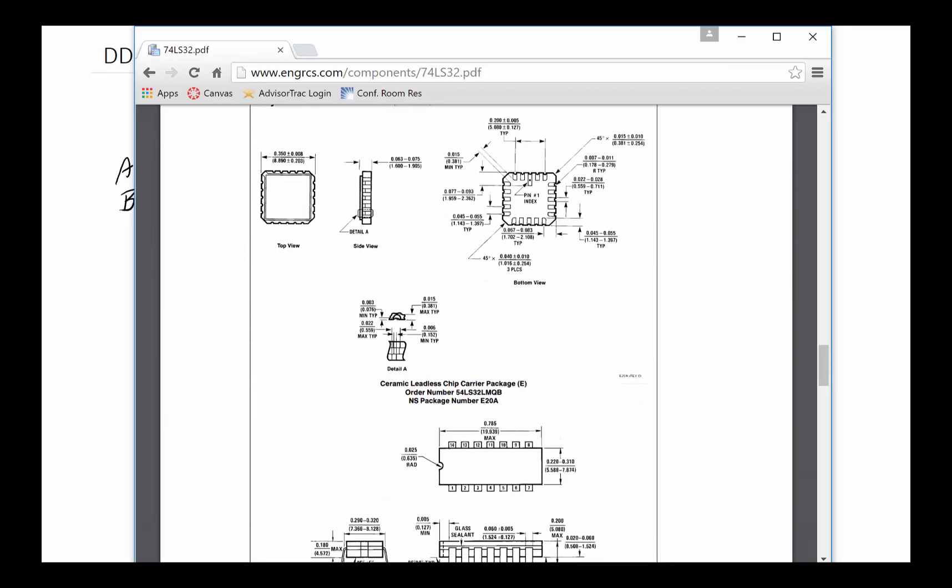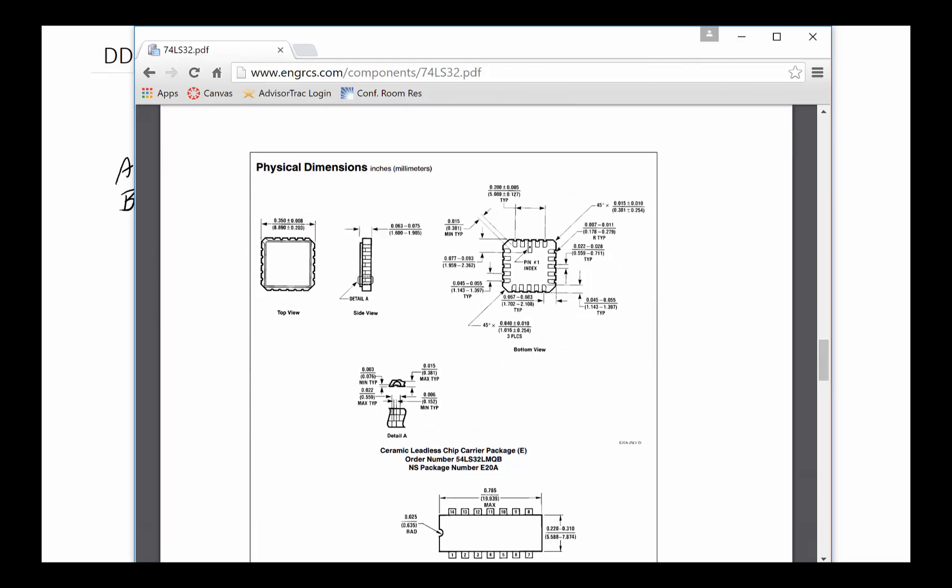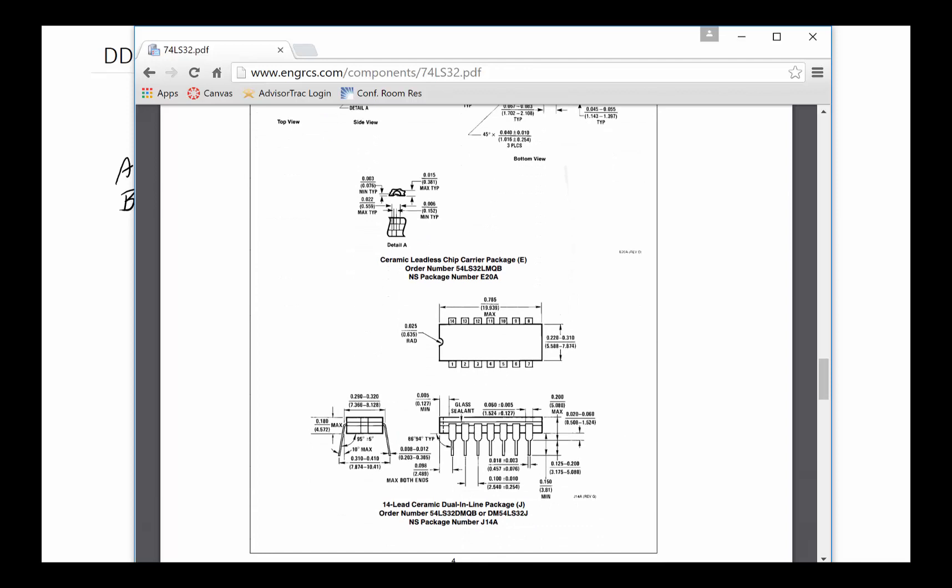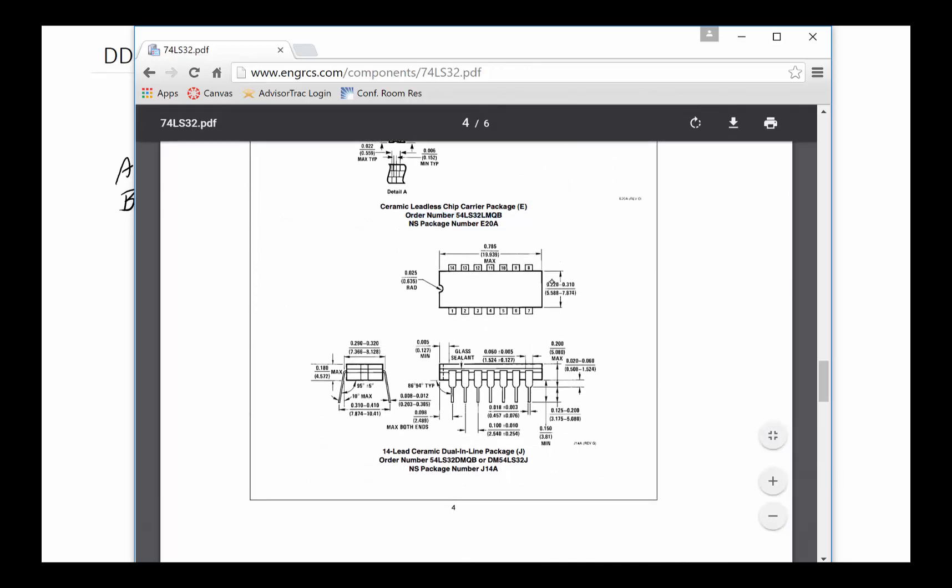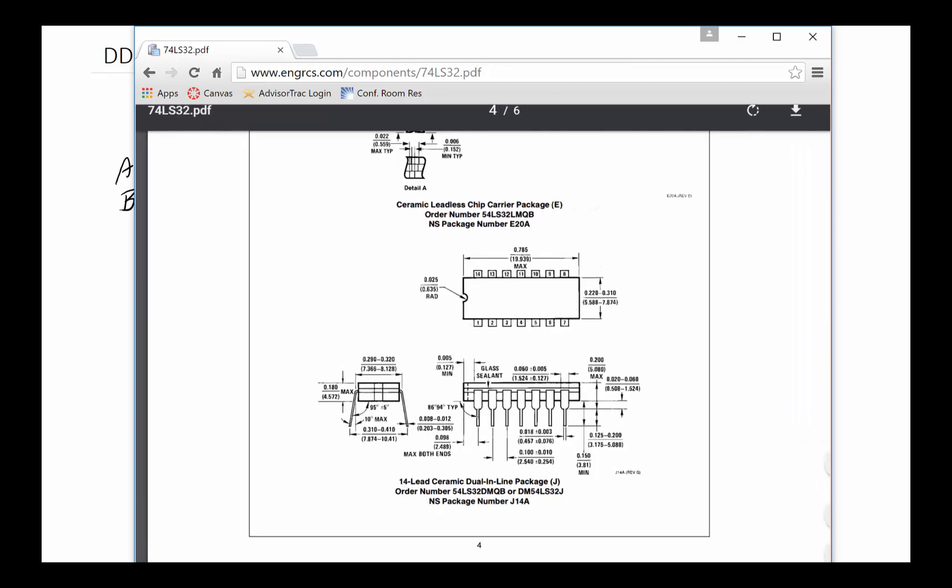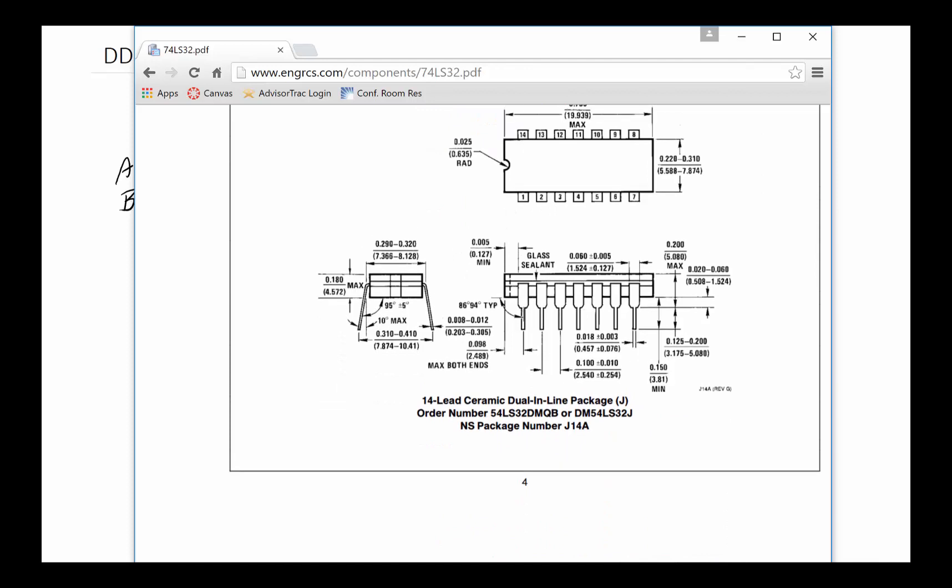These things come in all kinds of packages and this gives you all the physical dimensions in case you need to design a place to put them in. These are called surface mount packaging. If you go farther down, this particular packaging is what we are using in our case. There's a little dimple on the top indicating which way is up. Pin 1 is here, pin 7 is here, 8 to 14. These are called dual inline packages.